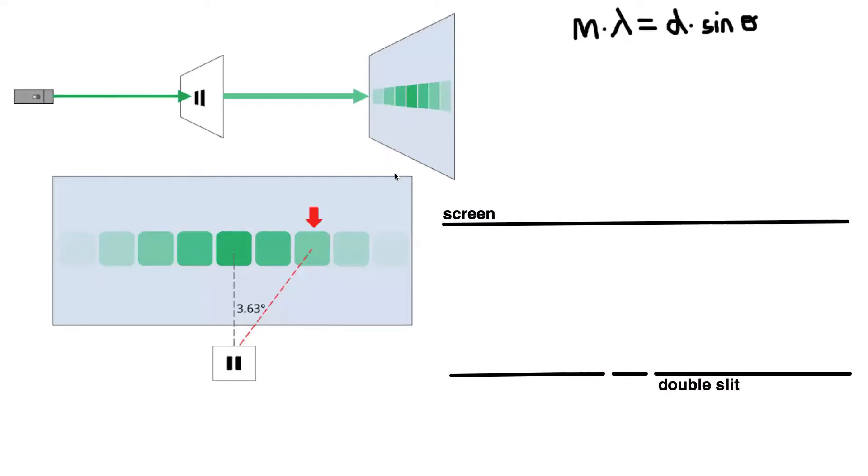When light shines through a double slit that's made of two slits next to each other, it diffracts and spreads out, forming the diffraction patterns shown on these screens here.